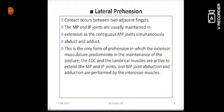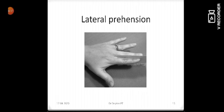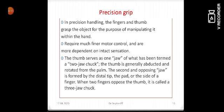Then we have the lateral prehension. The lateral prehension occurs when the contact occurs between the two adjacent fingers to hold an object. Here you can see this is the lateral prehension. The adduction of the fingers occurs along.